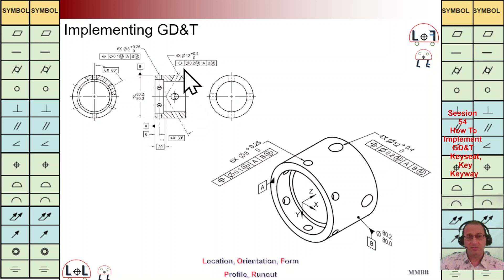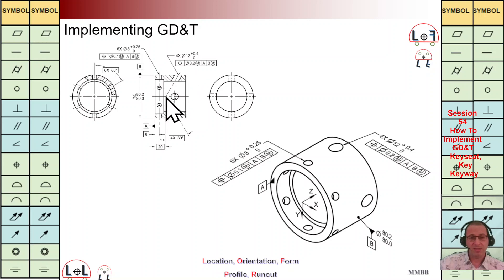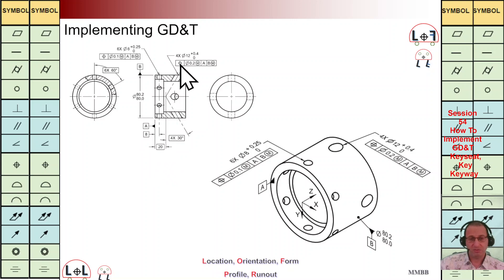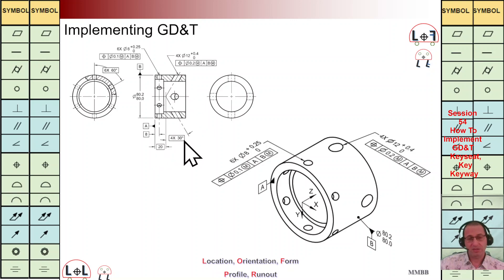This positioning control shows that this angle — this hole comes here and hits this axis B. The distance from here to reference plane A is 20, which is a basic dimension because it is a positioning control. Also this angle should be in a box as a basic dimension.